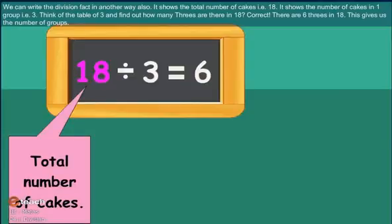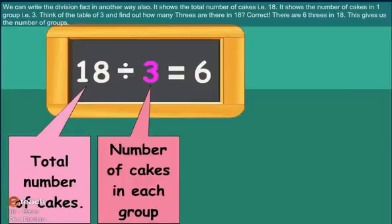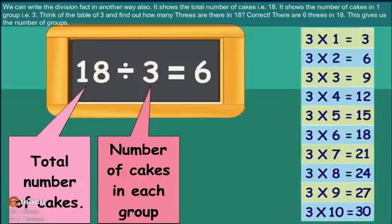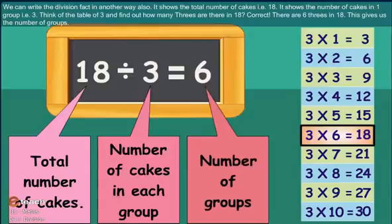It shows the total number of cakes. It shows the number of cakes in one group. Think of the table of 3 and find how many 3s are there in 18. This shows the number of cakes.